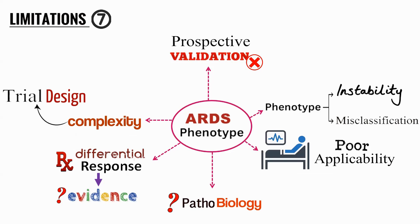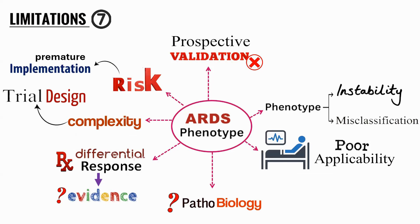Trial design complexities remain, and premature implementation of sub-stratification leads to a lot of risk. We saw this during COVID, where we defined ARDS as H-type and L-type. Later we realized that was incorrect — because it was categorized as H-type, certain patients were deprived of NIV and possibly died as a result. We later realized this distinction didn't exist and those patients did benefit from NIV and steroids.